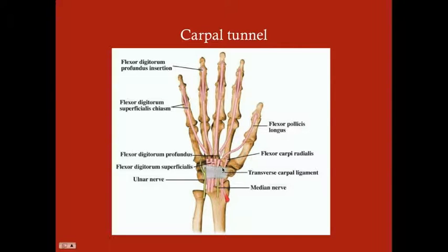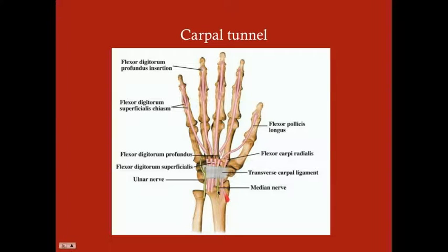Most structures passing through the carpal tunnel are flexor ligaments and tendons — we're looking at the palmar surface of the hand. Most importantly, there is one nerve that passes through the carpal tunnel: the median nerve. The ulnar nerve passes around it on one side, the radial nerve passes around it on the other. Because the carpal tunnel has a fixed pressure, the median nerve is at risk if anything goes wrong inside it.